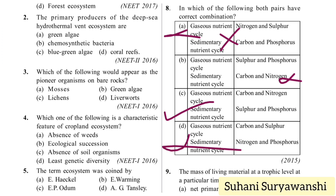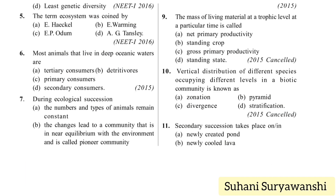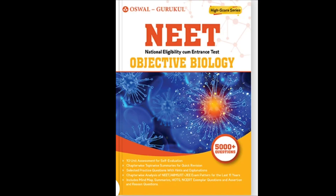The mass of living material at a trophic level at a particular time is called standing crop — option B. Vertical distribution of different species occupying different levels in a biotic community is known as stratification. If horizontal, it is called zonation. So the correct answer is option D — stratification.